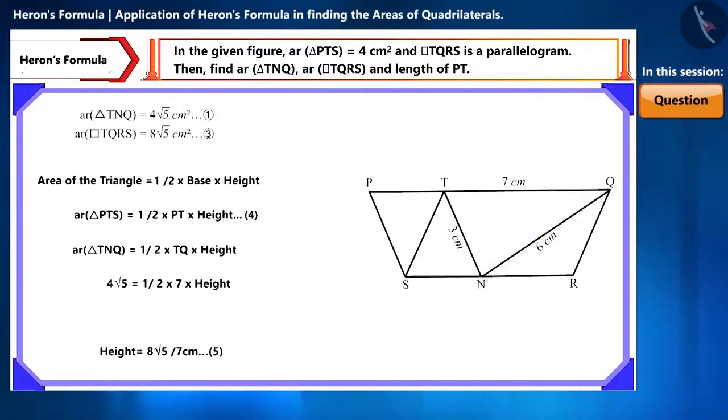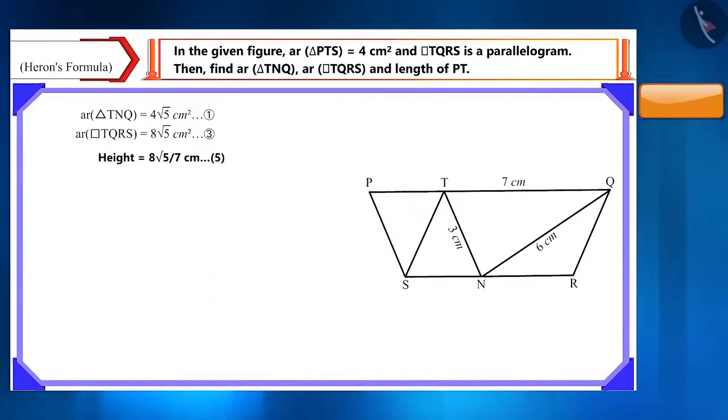Both these triangles TNQ and PTS are situated between the two parallel lines PQ and SR. Therefore, the height of triangle PTS will also be 8√5/7 cm. Now, in this equation, we can easily find the value of PT, which is the base, by substituting the values of the area and the height. Pause the video and try. Here, we obtain the length of PT as 7/√5 cm.